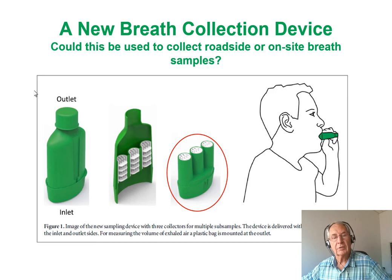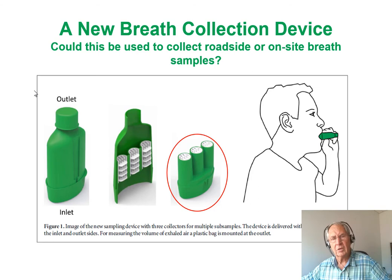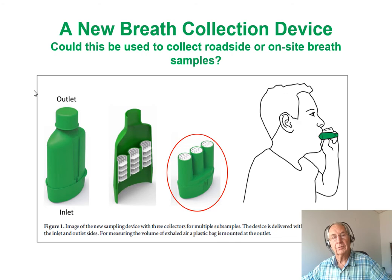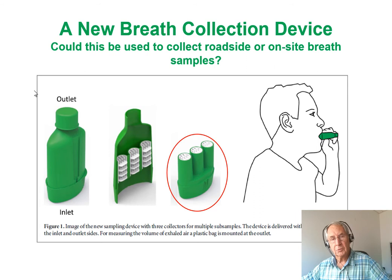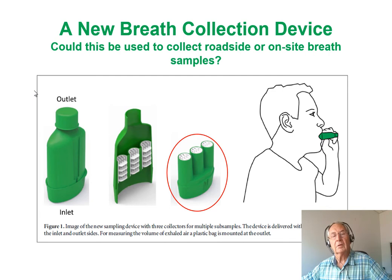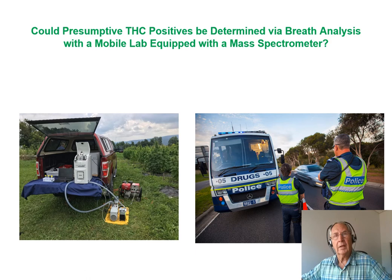For forensic drug testing, having three collectors is very handy: a screening test can be done on the first, and if that's a presumptive positive, the sample can be analyzed again by a central laboratory, and even a third reference laboratory if necessary. When you remove the upper portion of the device, you see the collectors, which can be pushed out easily into a vial and extracted. The condensate from the breath inside the collector is pushed into a vial, extracted with a solvent — in this work, absolute ethanol — and that extract is analyzed by LC-MS.